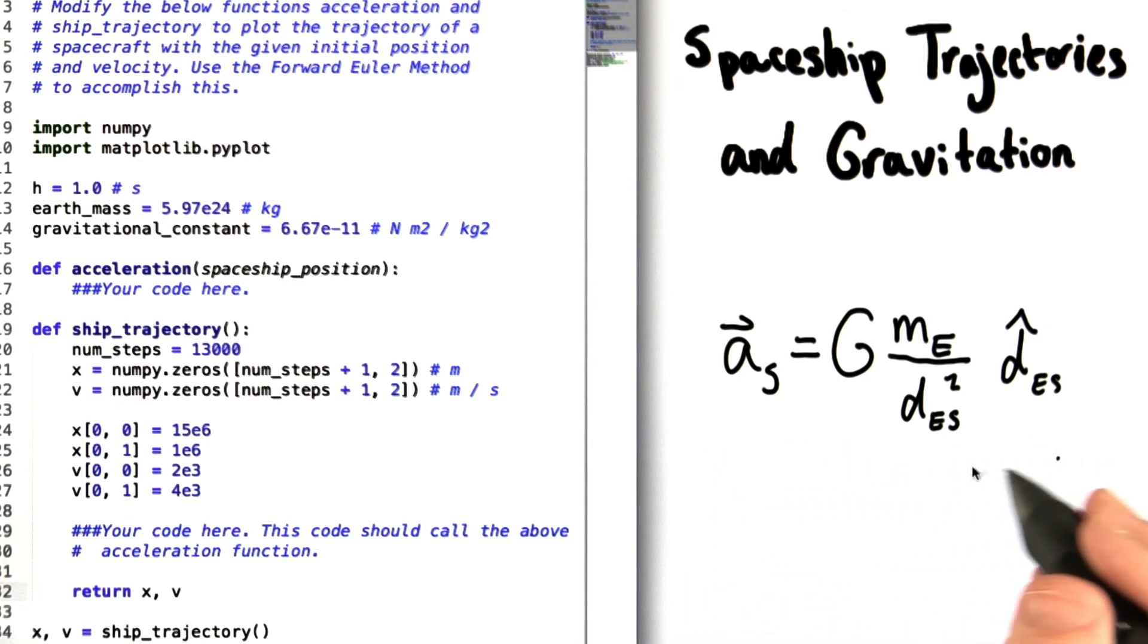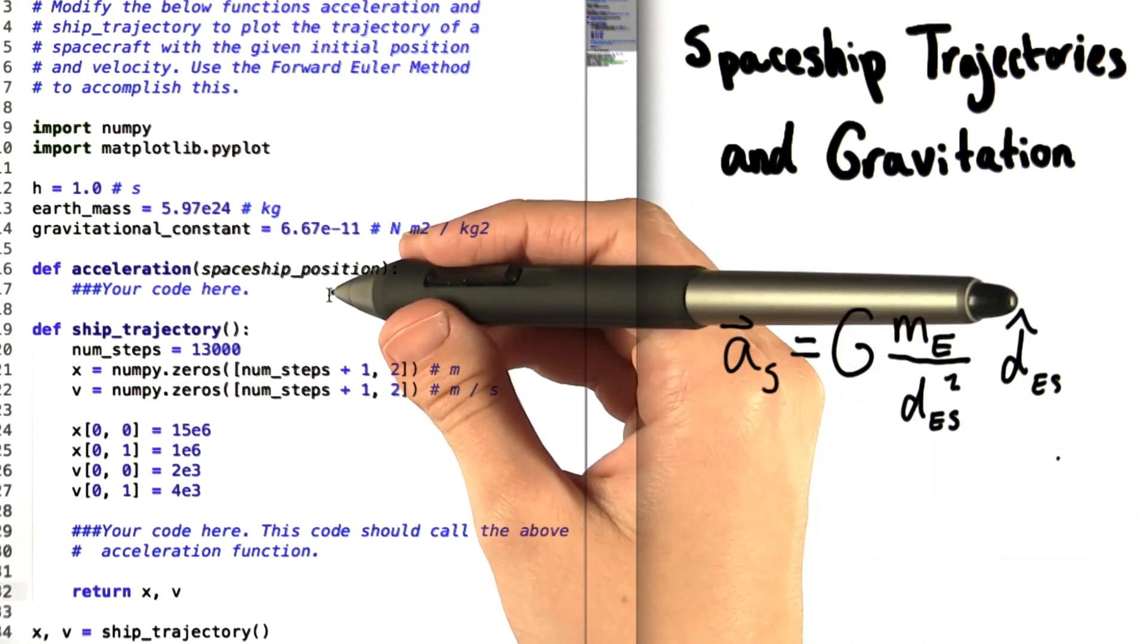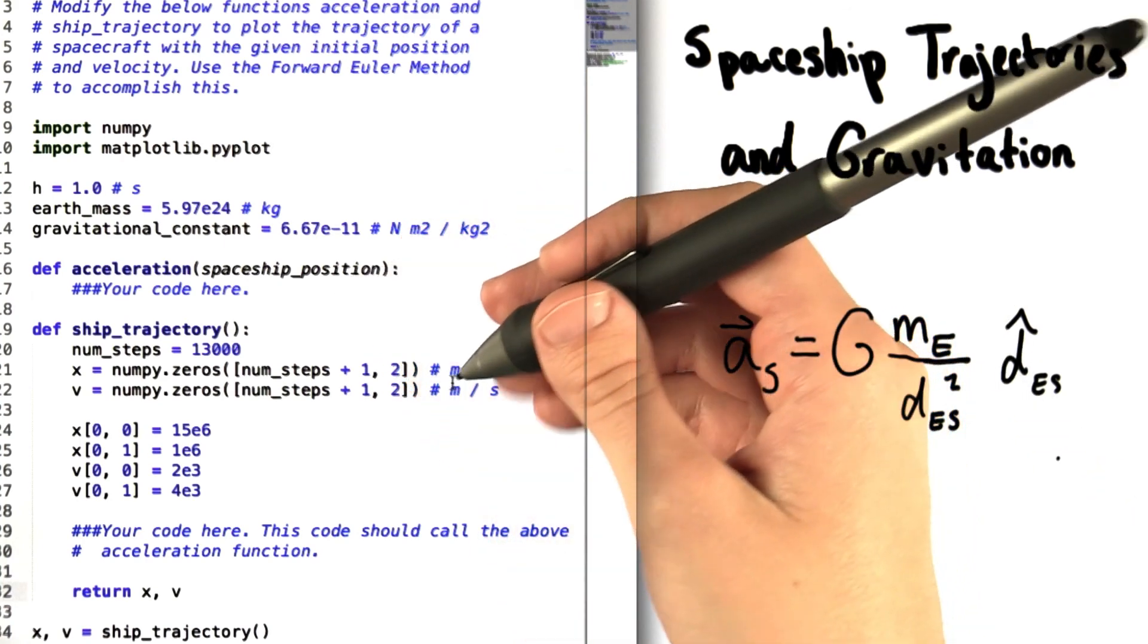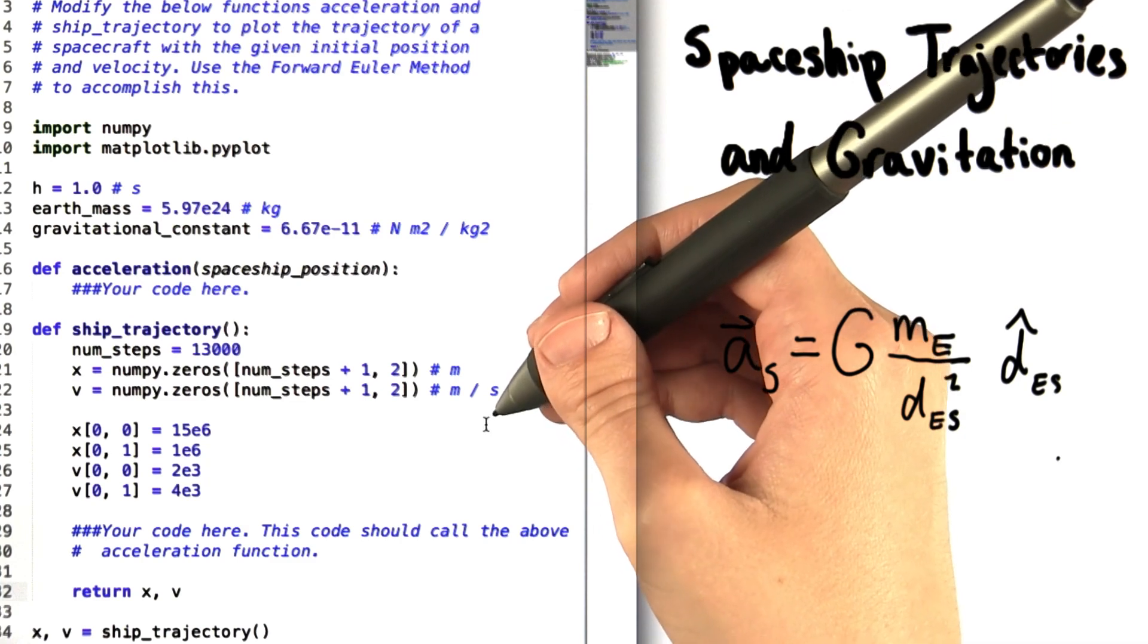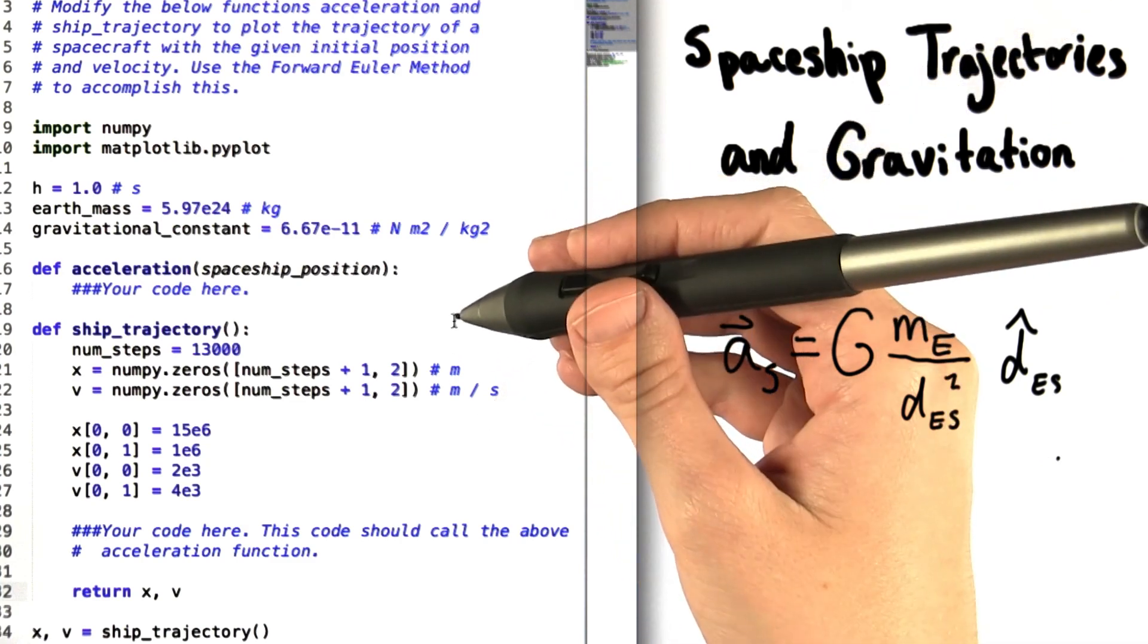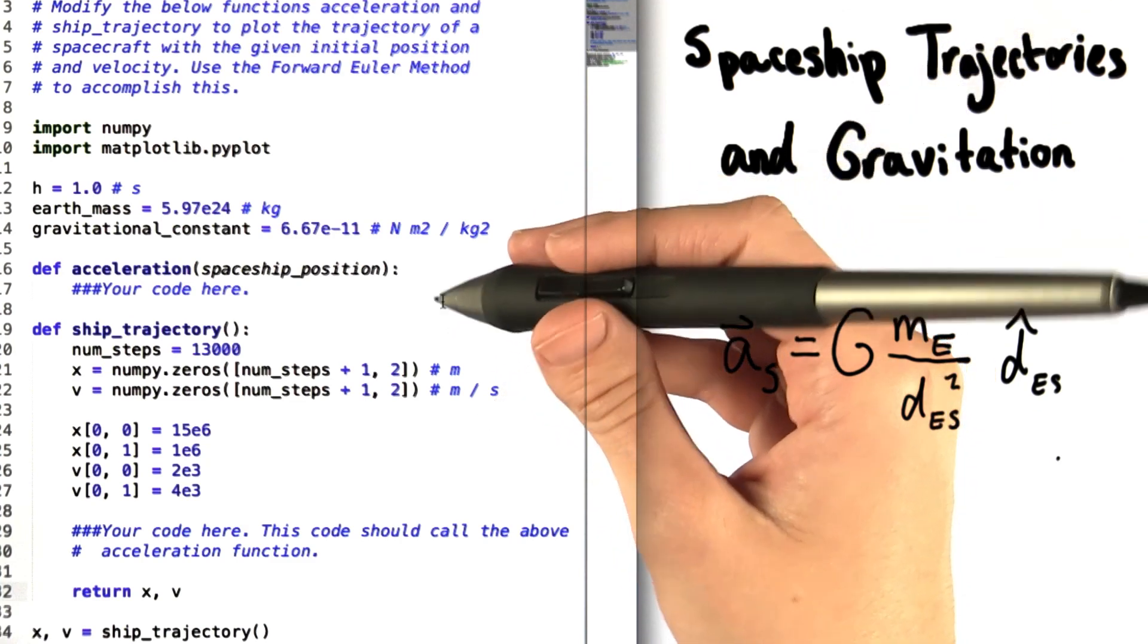Your job is to translate this equation into a Python expression for acceleration, and then use that expression, along with the information we've given you and the forward Euler method, to describe the position and velocity of the spaceship at any given time step.